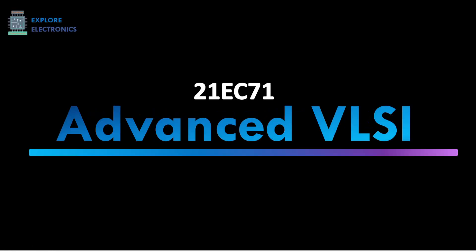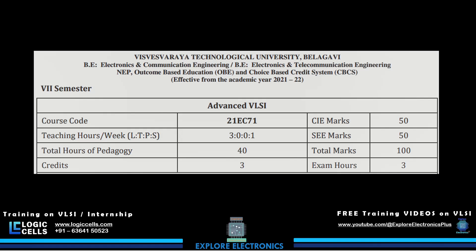Welcome back to Explore Electronics. This video is about the Advanced VLSI subject with code 21EC71. This subject comes under the 7th semester and carries 3 credits, with CIA and SE marks of 50/50 for a total of 100 marks. Let us understand this subject content through the perspective of a VLSI engineer — how students can understand this subject in terms of getting into the VLSI industry. There are five modules, each covering advanced VLSI concepts helpful for fetching a job in the industry.